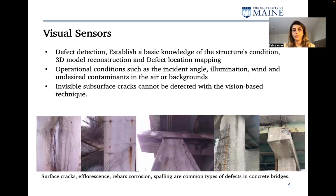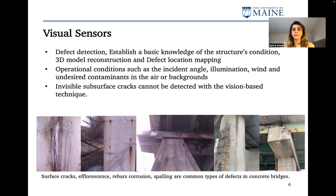One of the more common types of sensors used in bridge inspection are visual sensors, which we also call RGB sensors. This type of sensor is used for defect detection and also to establish a basic knowledge of the structure condition, develop a 3D model of the structure, and also defect location mapping. Operational conditions such as incident angle, illumination, wind, and undesired contaminants in the air or background might affect performance of these sensors.